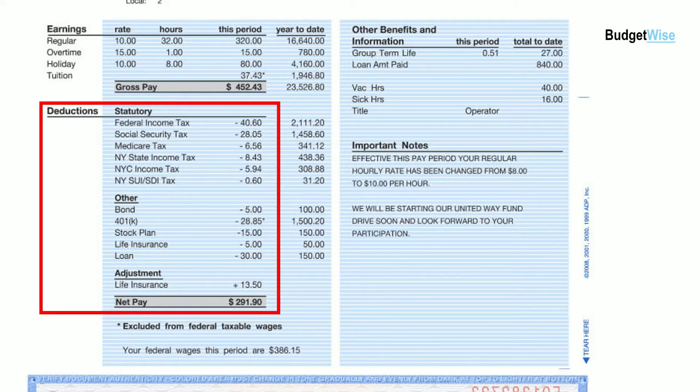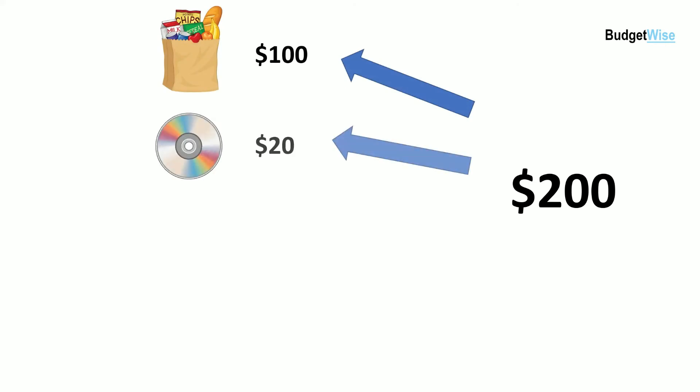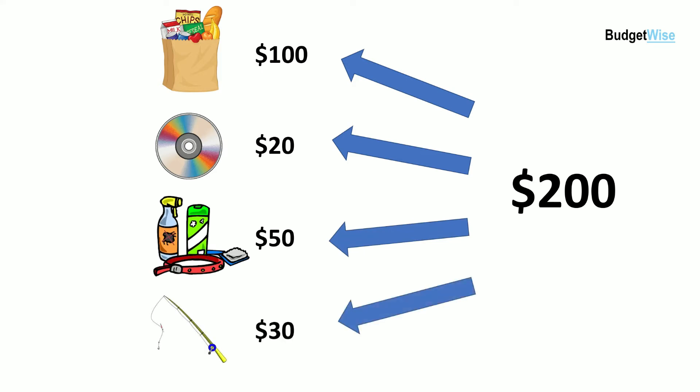Using splits allows us to account for those additional amounts. This is important when it comes to reporting to provide an accurate representation of where dollars are being applied. Take, for example, that trip to Walmart I made last week. I spent $200 at the store, but I bought $100 worth of groceries, 20 bucks on a movie, some pet supplies for $50, and a fishing rod for $30. Without splits, I would only be able to classify that entire $200 as a single transaction category where it clearly needs more than that.